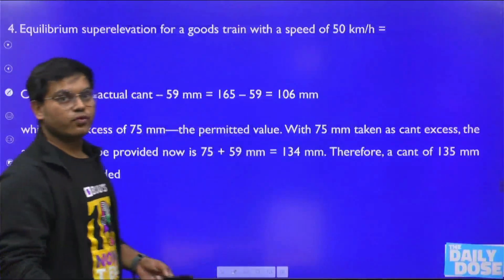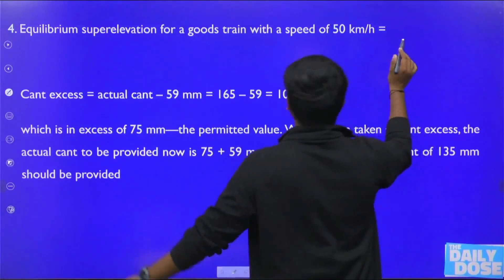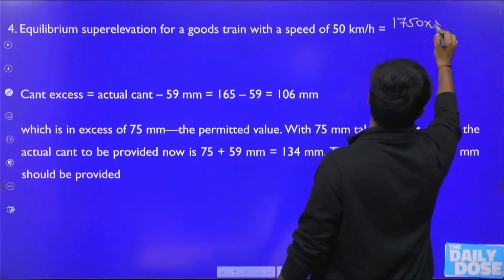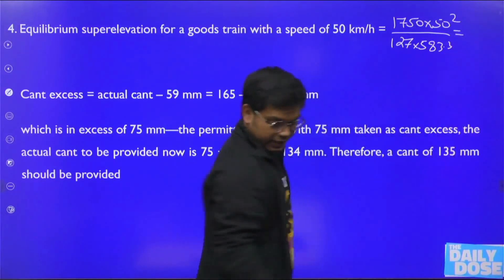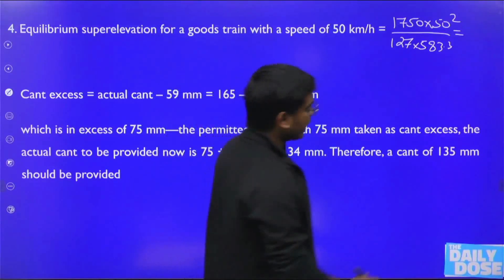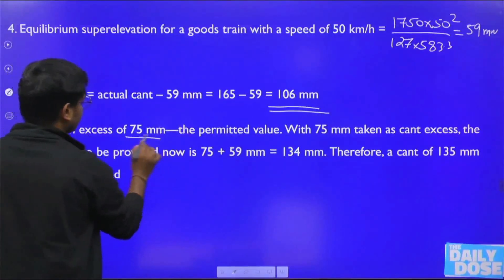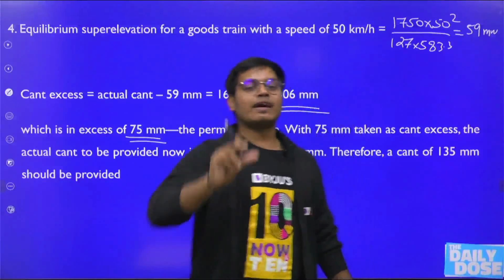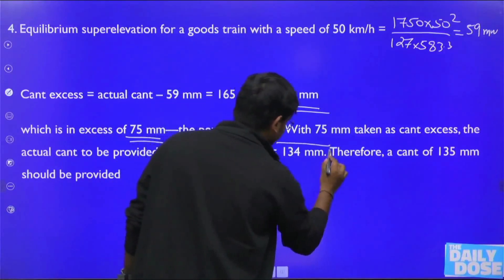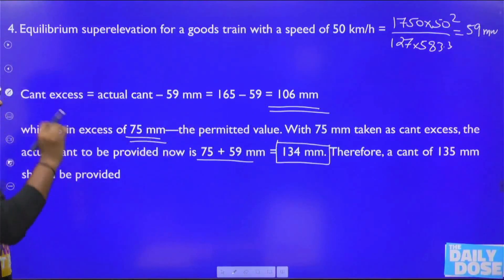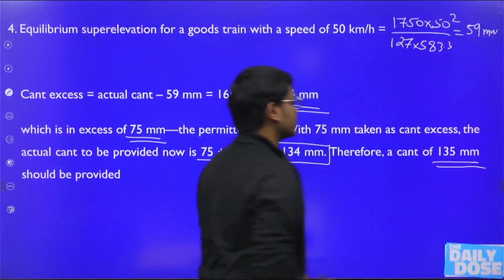Now check the cant excess criterion. Super elevation for goods train at 50 km/h: 1750 × 50² / (127 × 583.3) = 59 mm. The cant excess is 165 − 59 = 106 mm, which exceeds the 75 mm limit. We adjust the actual cant so the cant excess equals 75 mm, giving an actual cant of 59 + 75 = 134 mm, rounded to 135 mm.